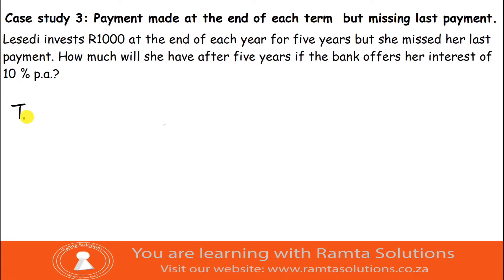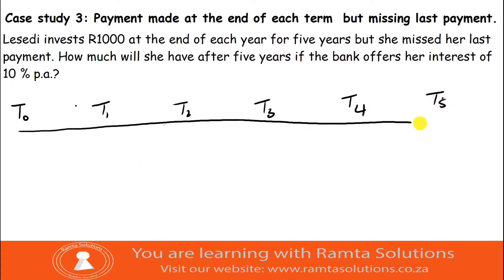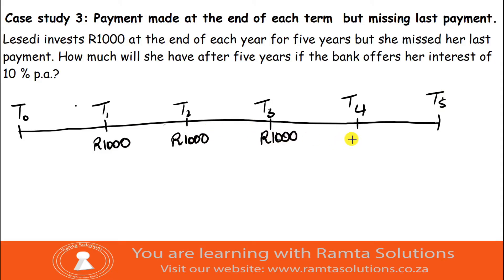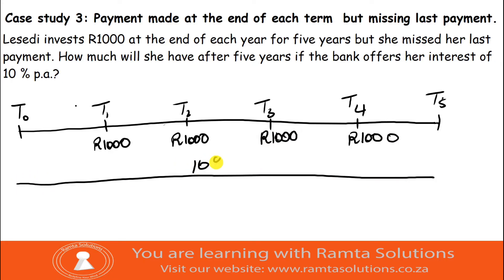Her timeline looks like this: t-naught, t1, t2, t3, t4, t5. She invests R1,000 at the end of each year — so this is the start of the first year, and these are the ends of year one, two, three, and four. She does not deposit at the end of the fifth year.